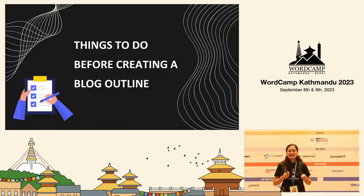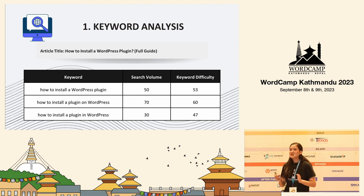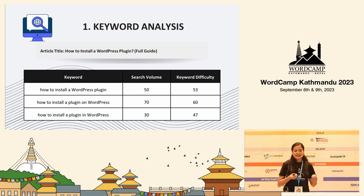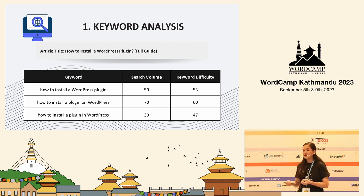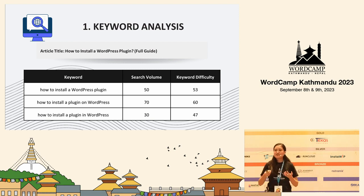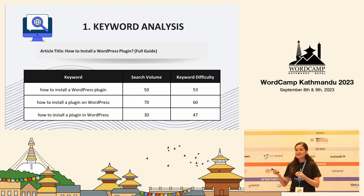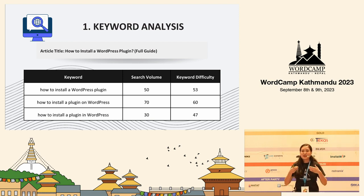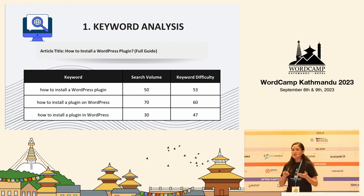Let's move to the topic: things to do before creating a blog outline. First, keyword analysis. Suppose you have already decided the title of your article. For our case, I will be taking the example 'How to Install a WordPress Blog: Full Guide.' After deciding the title, you have to figure out and collect different keywords using different SEO tools, and analyze them to find the search volume and keyword difficulty. Here is a table where you can see different keywords for the title with their search volume and keyword difficulty. Among them, you choose the ones with high search volume and low keyword difficulty. In this table, the best focus keyword for the article is 'how to install a WordPress blog.'